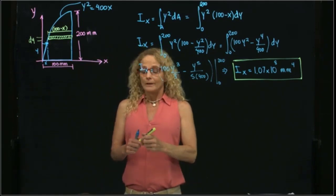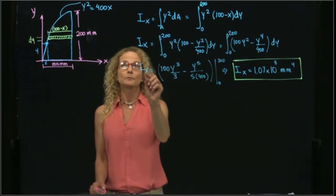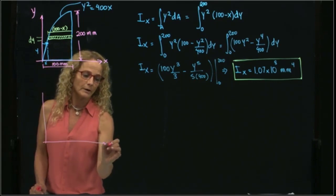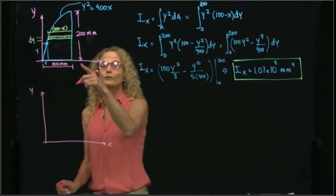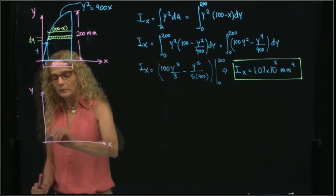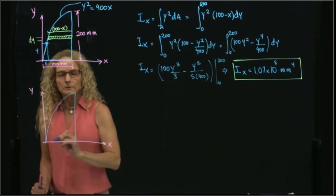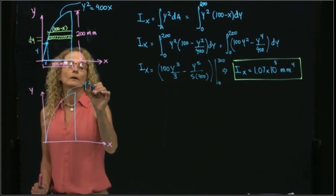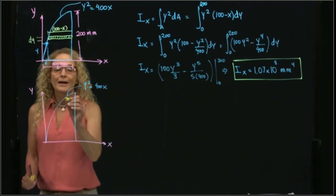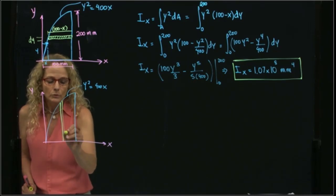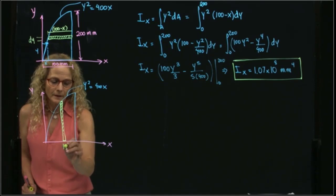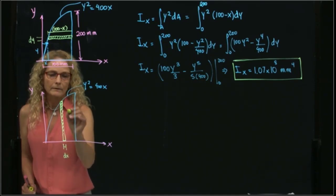Now let's calculate the area moment of inertia with respect to the y-axis. I will draw the figure again and use a strip parallel to the axis I want to calculate — in this case a vertical strip. The curve is still y squared equals 400x, and I will use a vertical strip where this is dx and this is my y.